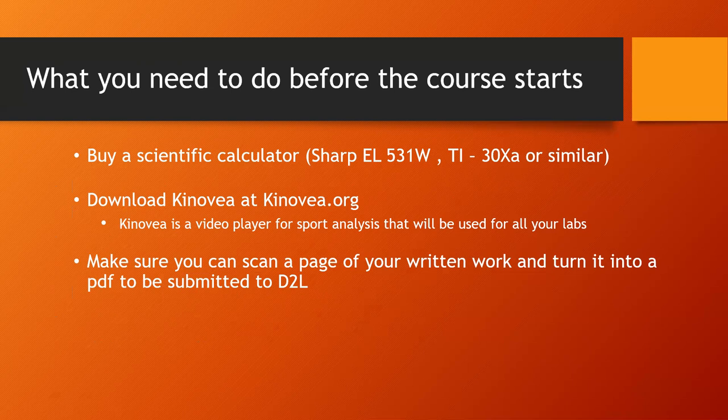You need to buy a calculator if you don't already have one. The Sharp EL-531 and the TI-30 are ones I've found students most often have. Anything similar works, but it must be a scientific calculator with sine, cos, tan, and an EE button. You'll also need to download Konovia, which is free open courseware you'll use for your labs — just go to konovia.org. Also make sure you know how to scan your work; for example, if you're doing a test at home and need to scan the pages and send them in.